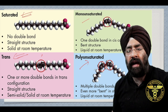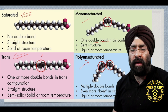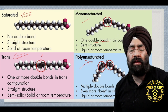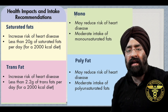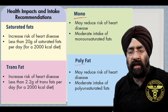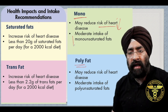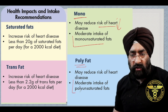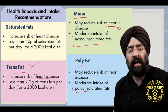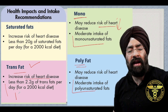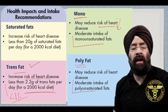Unsaturated means double bonds. Mono means one double bond, and polyunsaturated means multiple double bonds. These have many health benefits and impacts. Monounsaturated and polyunsaturated fats lower the risk to the heart. Trans fats carry a risk of less than 1% — better to keep them below 2 grams if you have a 2000 calorie diet.